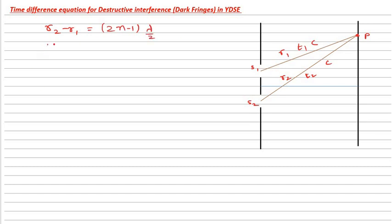If I substitute C times T2 minus C times T1, that is (2N minus 1) lambda by 2. Again, T2 minus T1 is equal to (2N minus 1) lambda by 2C. We know that T2 minus T1 is equal to (2N minus 1), again this lambda by C becomes capital T divided by 2.